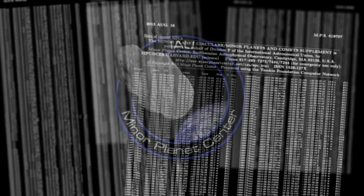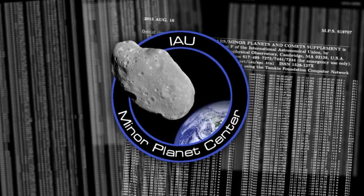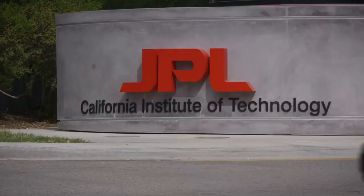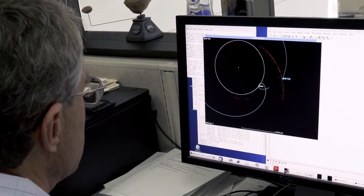The Minor Planet Center is the world clearinghouse for near-Earth asteroids. The Center for NEO Studies takes the observations from the Minor Planet Center and computes the high precision orbits that we use to make predictions.